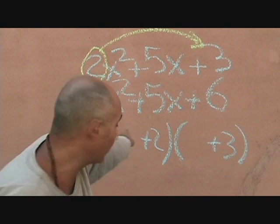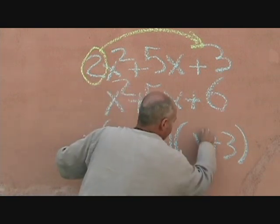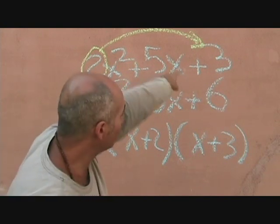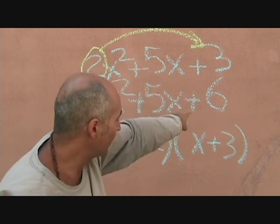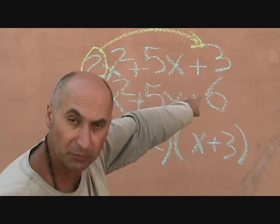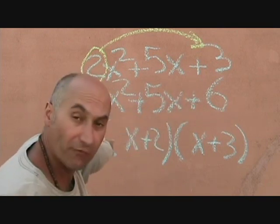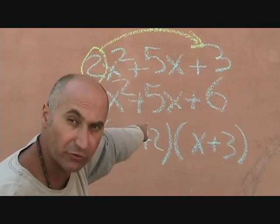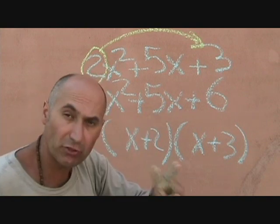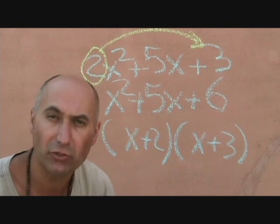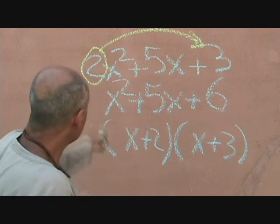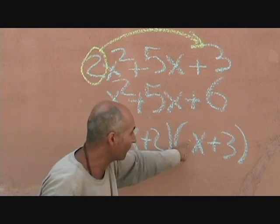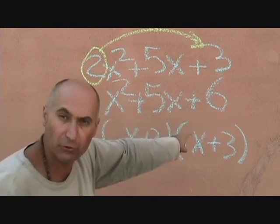The x squared you break down into x times x. So step number 2: factor your simple trinomial the way you factor simple trinomials, because as soon as you do that step, it becomes a simple trinomial. Step number 3: take the coefficient that was in front of the x squared and put it back in front of the x terms after you've factored the simple trinomial.